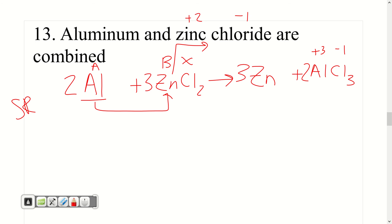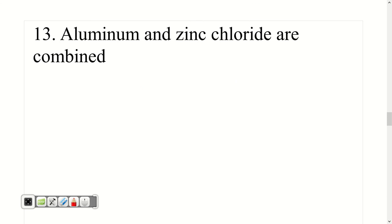So that's the process for predicting products. Identify the type of reaction. Move the elements on over based on the type of reaction involved. Balance the charges to write the correct formulas or recognize diatomics. And then finally balance the overall equation. So that's what we're looking for. Have a good one. Bye.